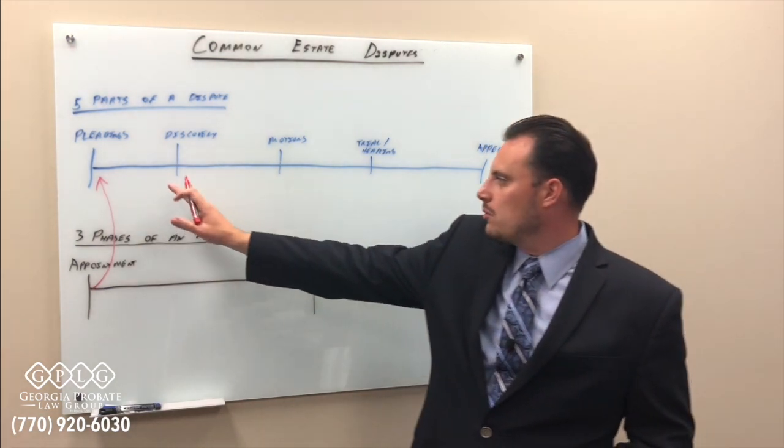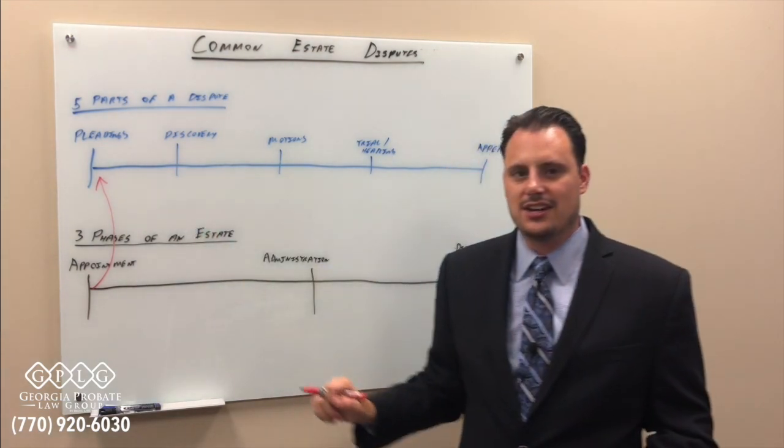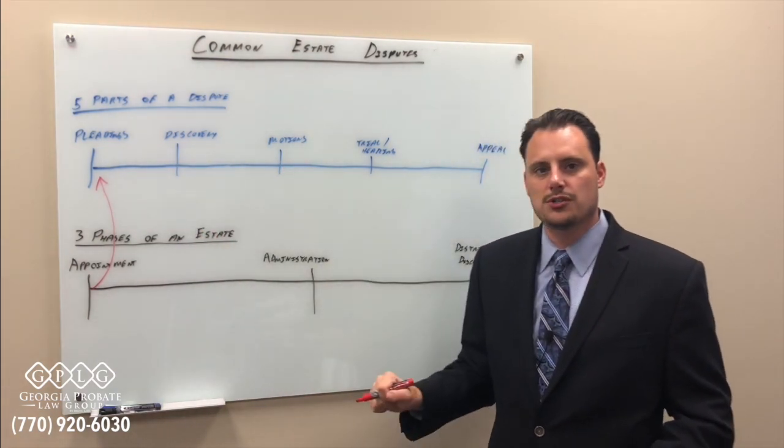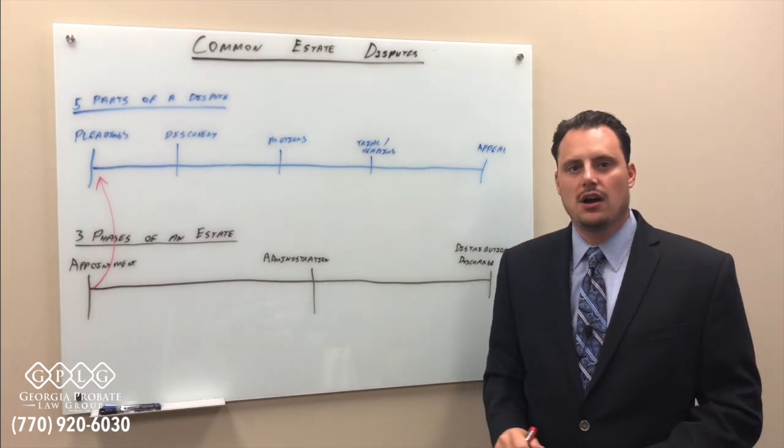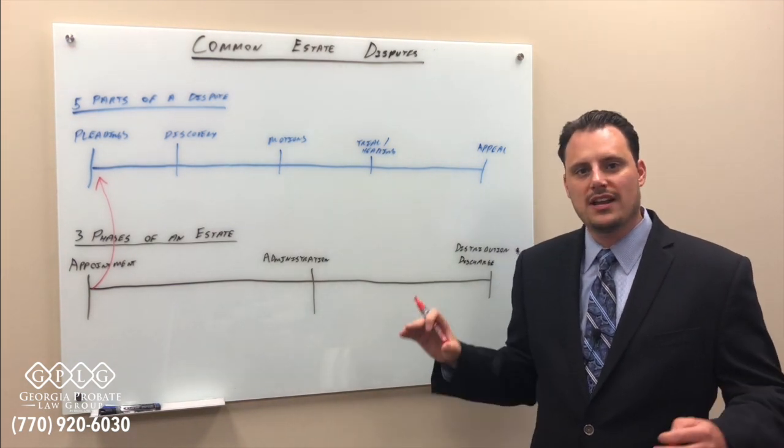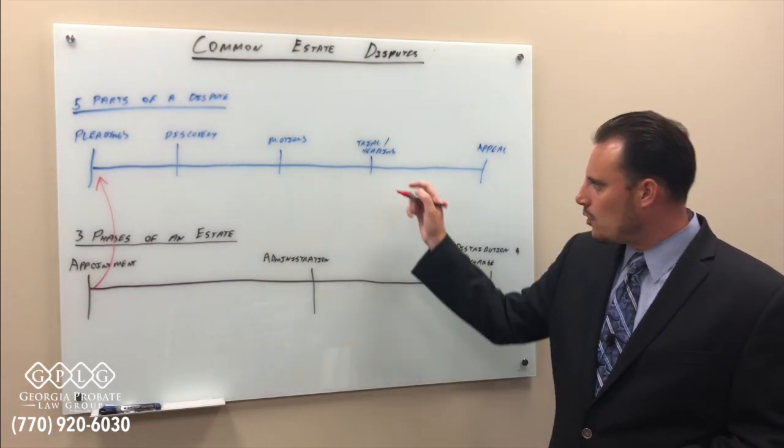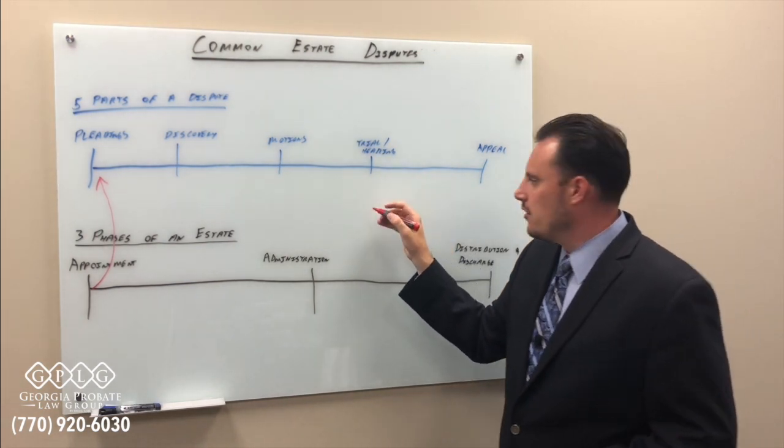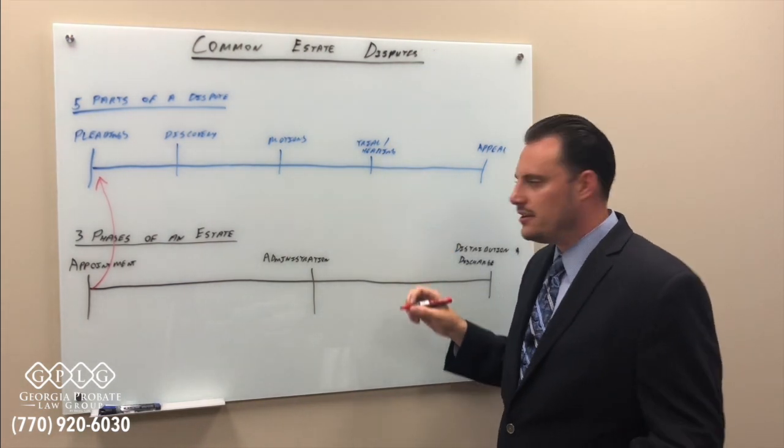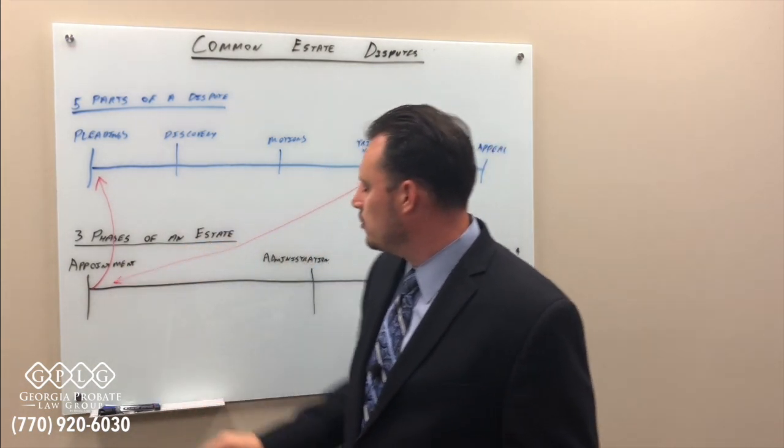Then we'll proceed forward to discovery where we'll look for evidence to support the allegations that are made. There may be some motions made in the case. And finally, the case will proceed to court to a trial or a hearing on that particular issue of whether or not the will is valid. Once that trial or hearing occurs, the court will have rendered its decision and we will come back over here to where we left.